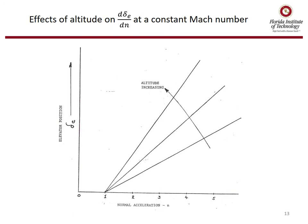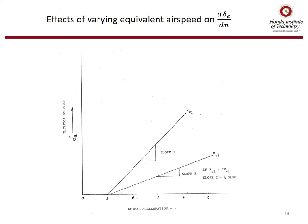Now we'll examine the effects of altitude on our slope at a constant Mach number — we see the reverse effect. There's a large increase in the DCM-DCL term, which dominates the change in the damping term. Thus, our slope increases with altitude at a constant Mach number. Finally, at higher equivalent airspeeds the slope is reduced. In the example, VE2 is twice VE1, so the slope at VE2 is one-fourth the slope at VE1.